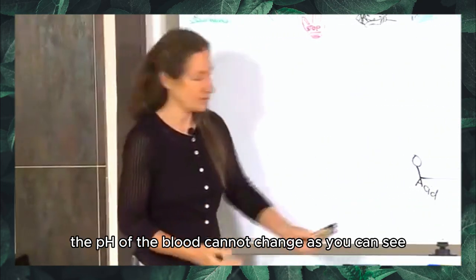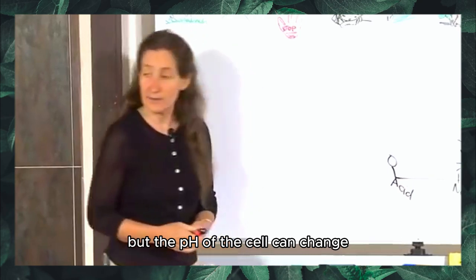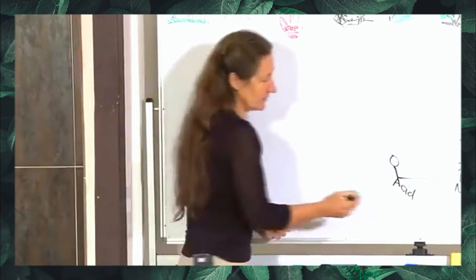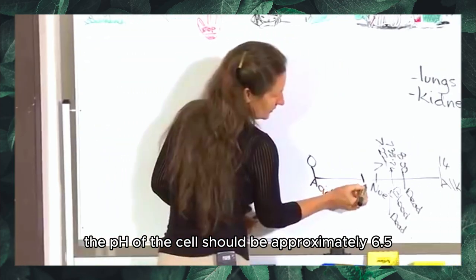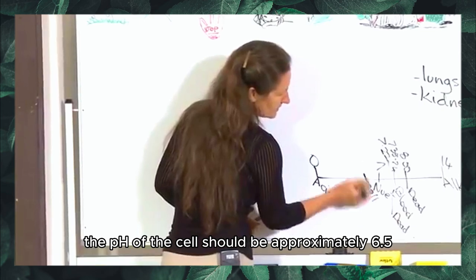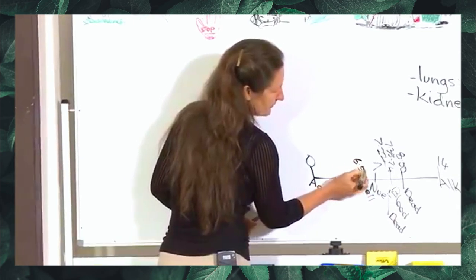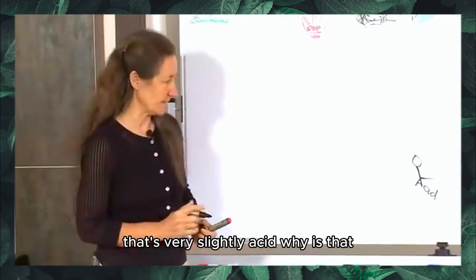The pH of the blood cannot change as you can see, but the pH of the cell can change. The pH of the cell should be approximately 6.5. That's very slightly acid. Why is that?